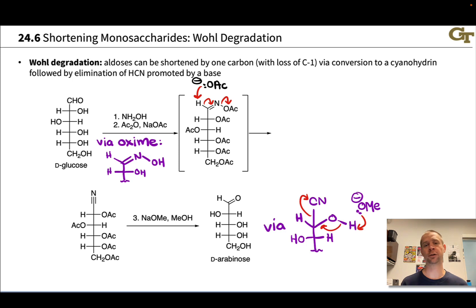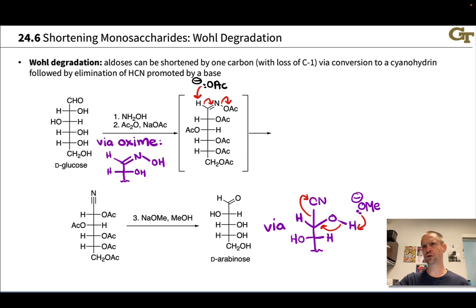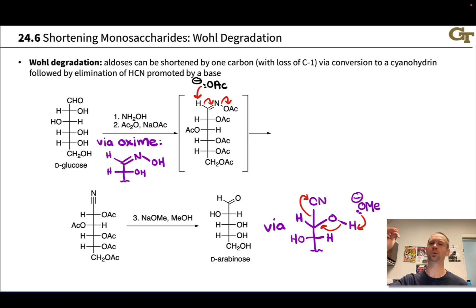The Wohl degradation is a way to take any aldose monosaccharide and degrade it all the way back down to glyceraldehyde. The method breaks down when you reach glyceraldehyde since you run out of carbons, but it allows us to chop carbons off a monosaccharide one at a time, starting at the aldehyde carbon — carbon one — and working our way down with each iteration.